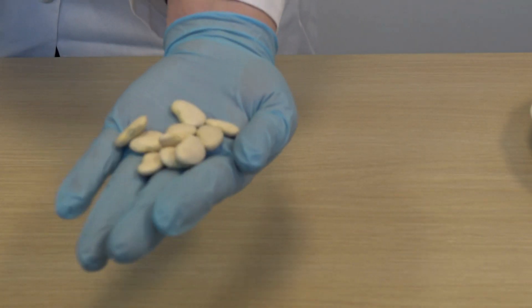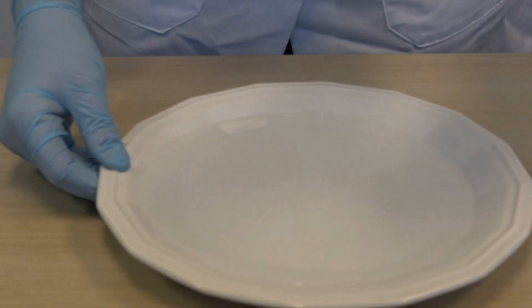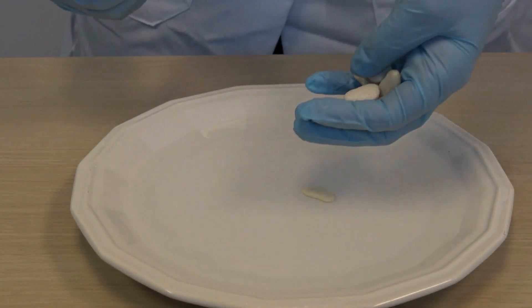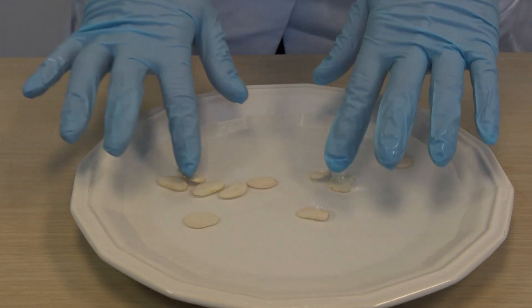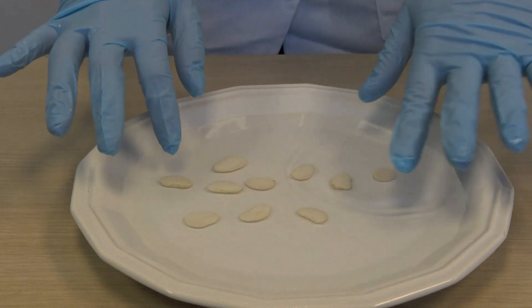Take your lima beans and soak them in warm water for at least 12 hours. Make sure that the beans are submerged on the plate.